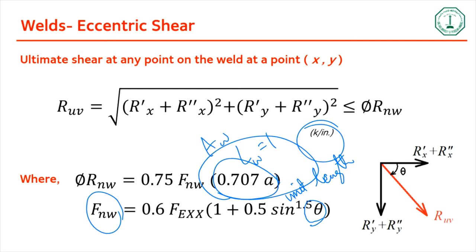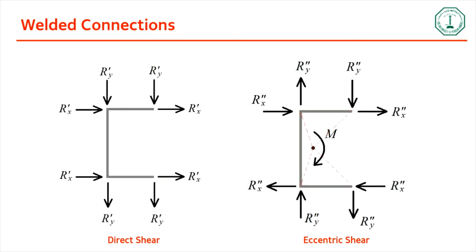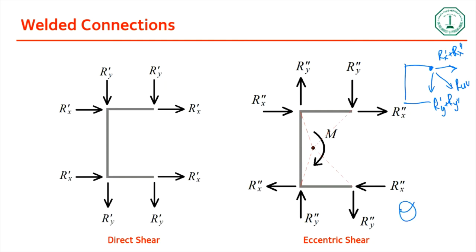Theta is important because 0.6 Fexx is the base strength of the weld and the (1 + 0.5 sin^1.5 θ) factor modifies it. Theta is the angle between the force direction and the orientation of the weld. In this figure, you have the resultant ruv acting at some point, and the orientation of the weld is along a particular direction, so theta is the angle between the resultant force and the weld line.